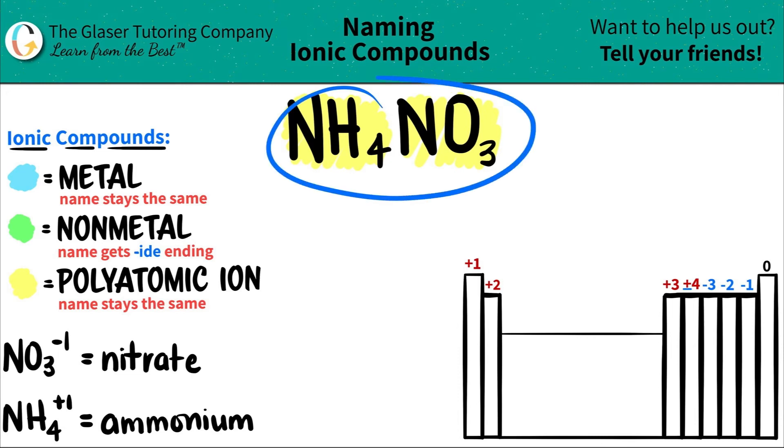All of these are non-metals. But since I have two polyatomics that have charges and they give electrons and one accepts it, that's an ionic compound.